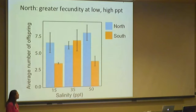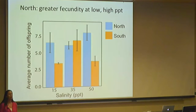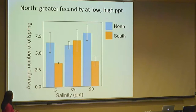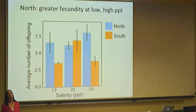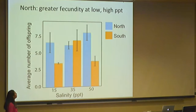Getting right into some results, I found that the northern copepods had greater fecundity — produced more offspring — at low and high salinity. With salinity on the x-axis and average number of offspring on the y-axis, you can see that at 35 PPT, the ambient control salinity, there's no difference between populations. But at high and low salinity, the north is producing more offspring under these stressful conditions.